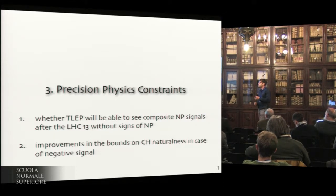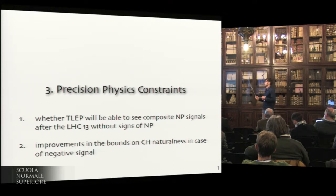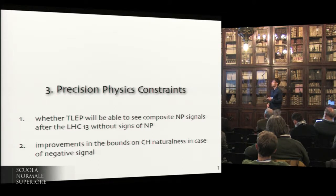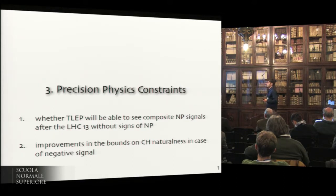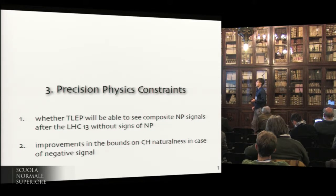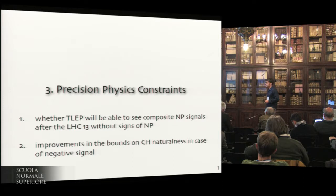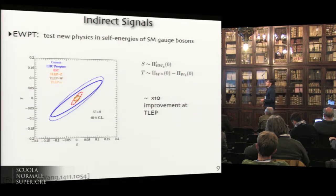Now, assuming LHC 13 has run and we haven't observed anything definitive, an interesting question is whether TLAB can still see something and, if it sees nothing, what limits it can place on models. We start with electroweak precision tests, which test new physics in gauge boson self-energies. At TLAB we expect a factor of 10 improvement with respect to current bounds on the S and T parameters.